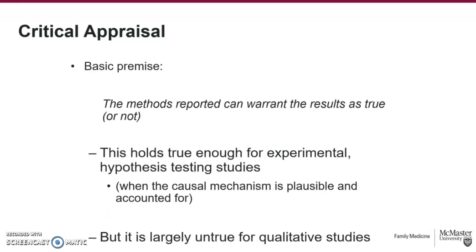This brings us back to the basic premise that the methods reported can warrant results as true or not. This does hold true for experimental hypothesis-testing studies — when the causal mechanism is plausible and accounted for, following the reported methods should tell us whether results are true. But it doesn't really work for qualitative studies because we're not testing hypotheses and we're not doing causal research. There's no causal mechanism to test for, so this foundational assumption about the relationship between methods and truth doesn't fit qualitative research.